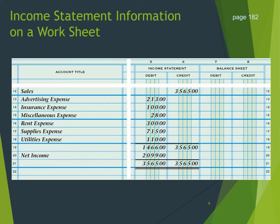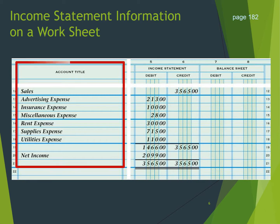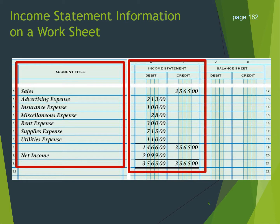You are now looking at an income statement section on the worksheet. We have our sales and all of our expenses — the revenue and expense portion of the income statement as well as the net income or the net loss. Looking at columns 5 and 6, we have sales, which is our revenue credited, and then we have our debits all listed in the debit column. Then we took the difference between our revenue and expenses and came up with our net income. All of this information will be recorded on the actual income statement, which is our financial document.